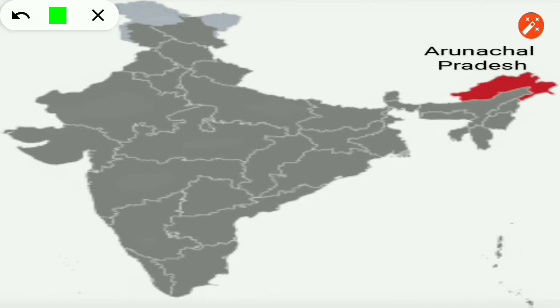Now, Arunachal Pradesh. In Hindi, the sun has another name: Arun. Arun means sun, and Pradesh means place. So Arunachal Pradesh is the place of the rising sun. You may know that the sun first rises in Arunachal Pradesh in India — the first sunrise in the country happens in Arunachal Pradesh.